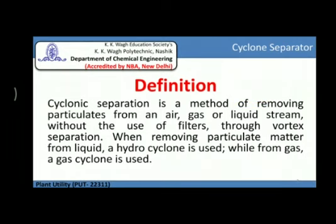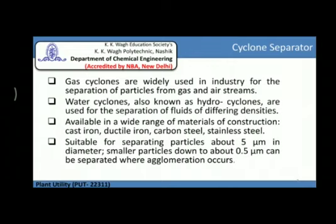This cyclonic separation is a method of removing the particulates from an air, gas, or liquid stream without the use of filters through vortex separation. When removing the particulate matter from a liquid, a hydrocyclone is used, while from gas, a gas cyclone is used. These gas cyclones are widely used in industry for the separation of particles from gas and air streams. Water cyclones, also called hydrocyclones, are used for the separation of fluids of differing densities.